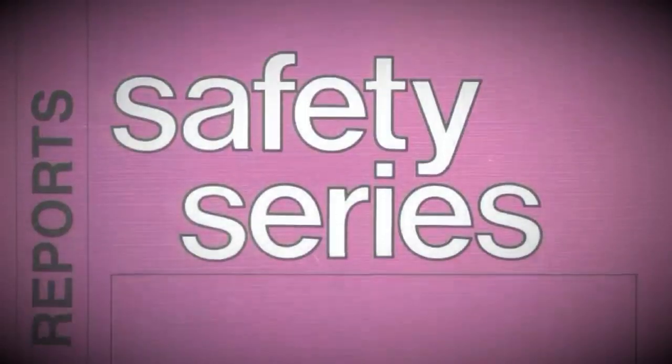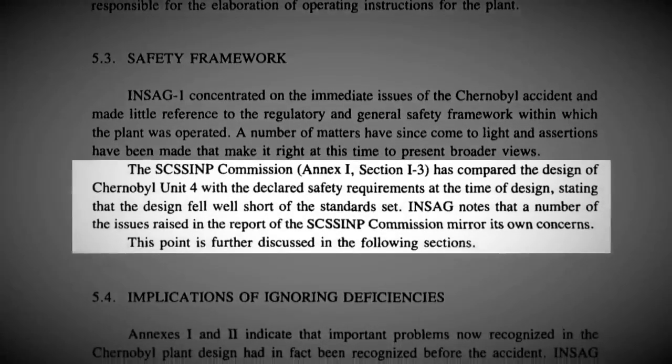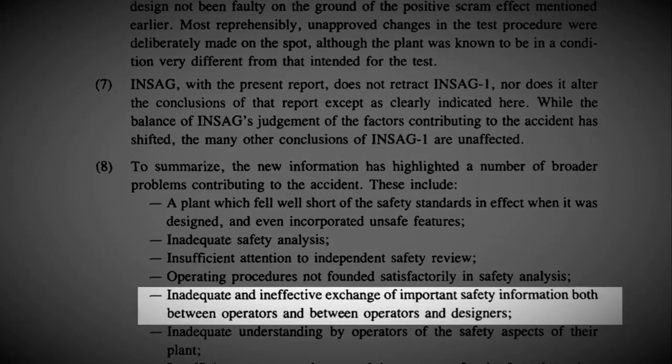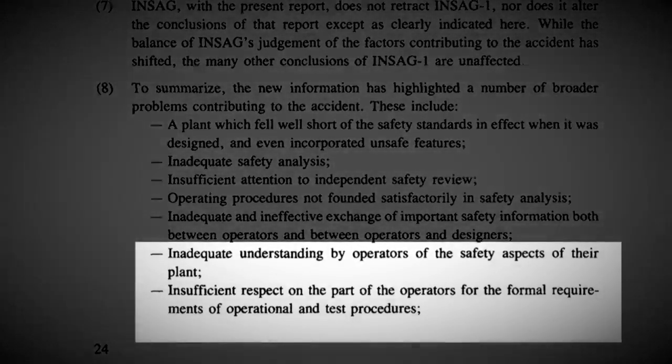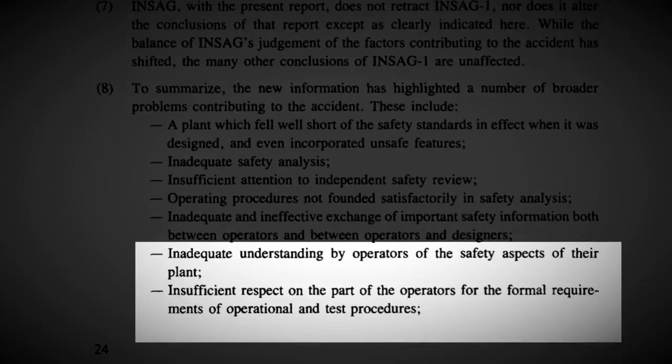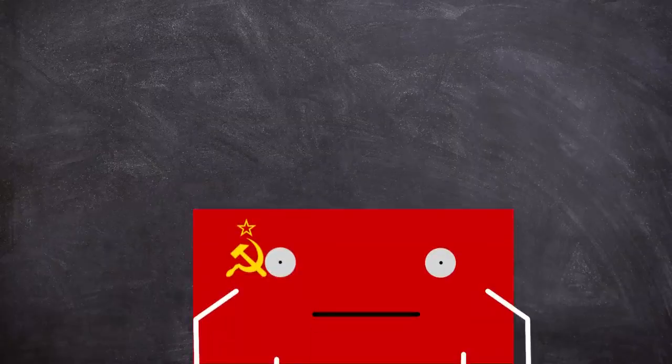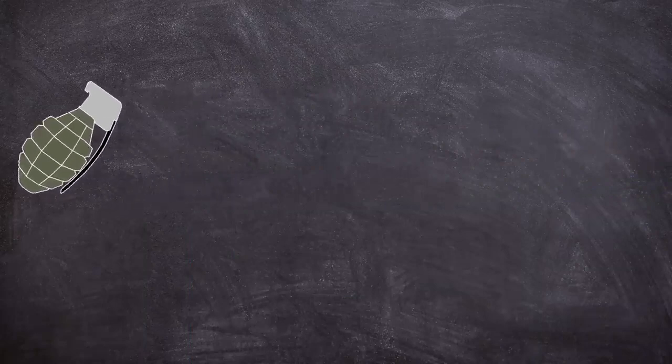This was all highlighted in the 1992 INSAG-7 report, which also said in its summary: 'The plant fell well short of the safety standards in effect when it was designed and even incorporated unsafe features, compounded by inadequate and ineffective exchange of information between both operators and between operators and designers. There was an inadequate understanding by operators of the safety aspects of their plant, also affected by insufficient respect on the part of the operators for the formal requirements of operational and test procedures. The industry in the USSR had an insufficiently effective regulatory regime in place to counter pressures for production.' The pressures from central government and lack of awareness of the design risks of the reactor meant that management acted dangerously in the false pretense that the RBMK was indestructible. Pretty much the entire management structure was throwing around a grenade that they didn't know had the pin pulled out of, meaning disaster was only a matter of time.